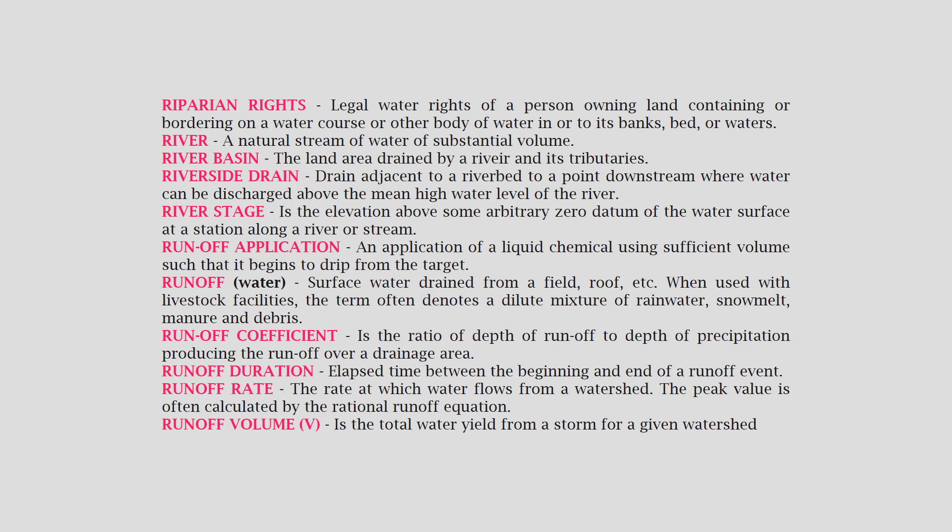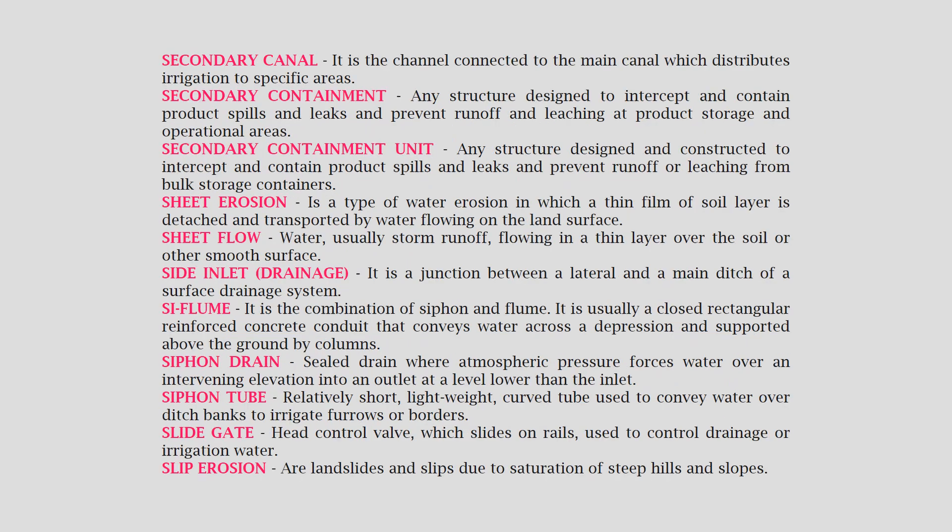Runoff rate: the rate at which water flows from a watershed; the peak value is often calculated by the rational runoff equation. Runoff volume: the total water yield from a storm for a given watershed. Secondary canal: the channel connected to the main canal which distributes irrigation water to specific areas.